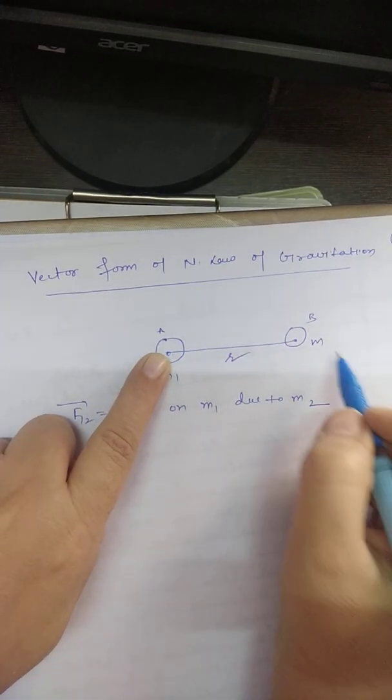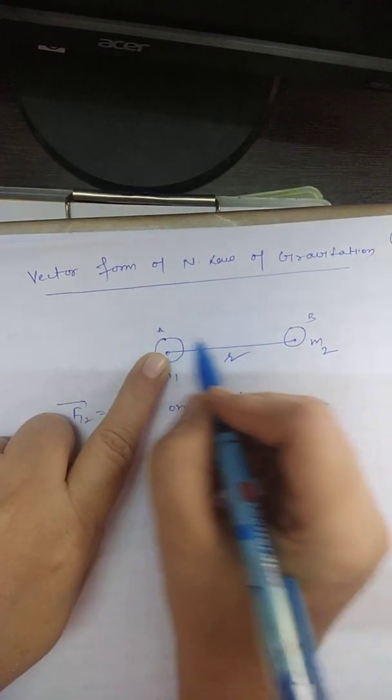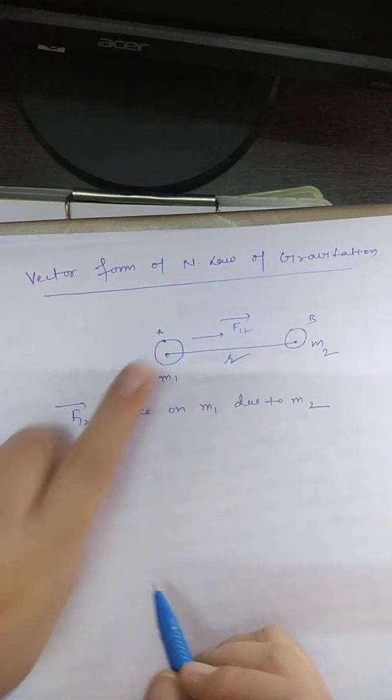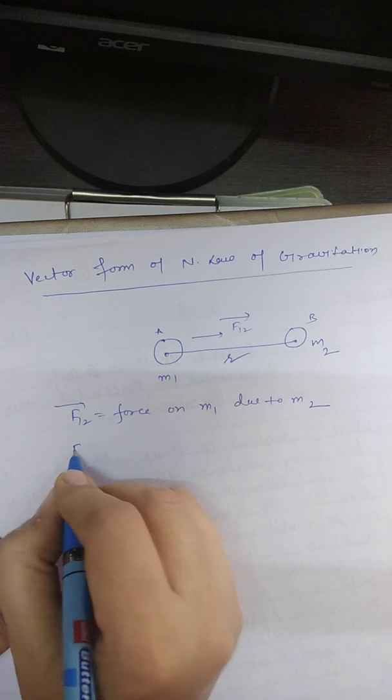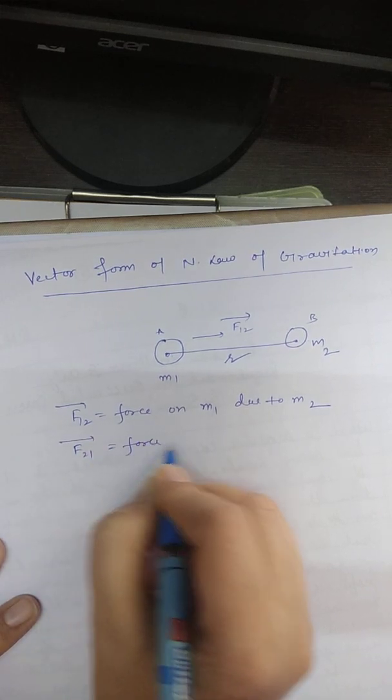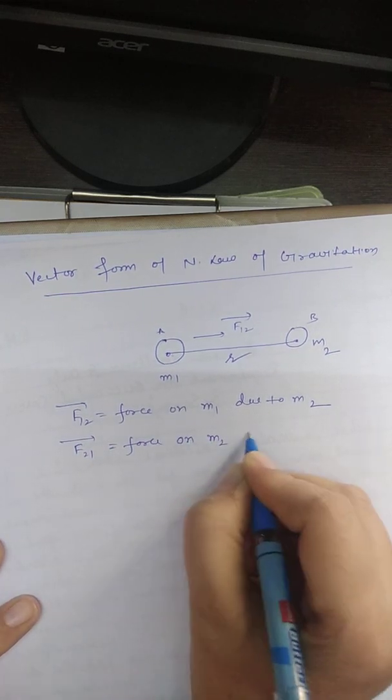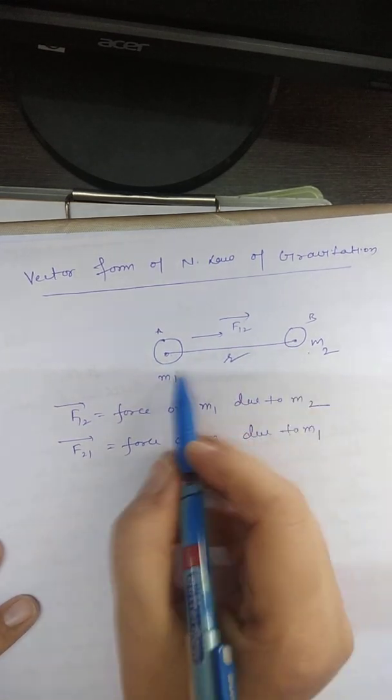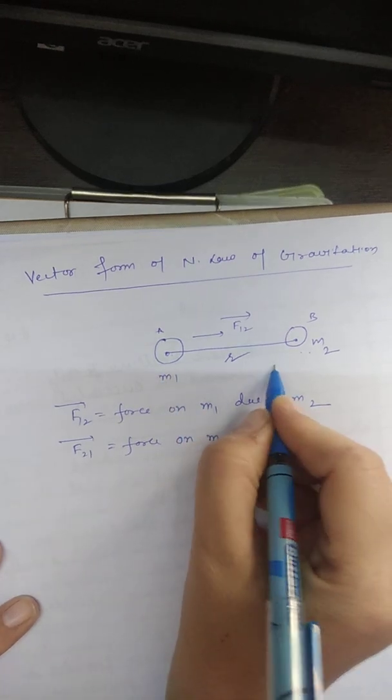M2 will attract M1 towards itself. So F12 is in this direction. Now F21, it is the force on M2 due to M1. So F21 will be in the opposite direction, attracting towards M1.